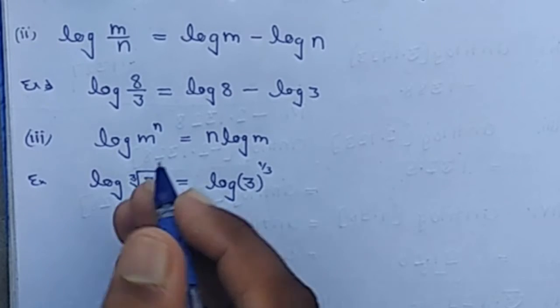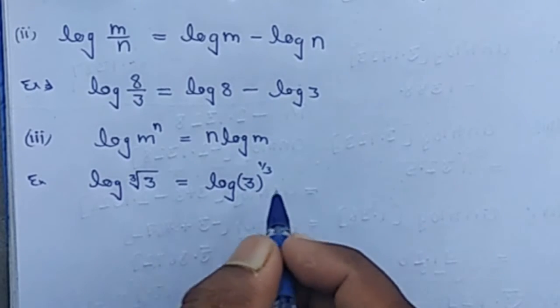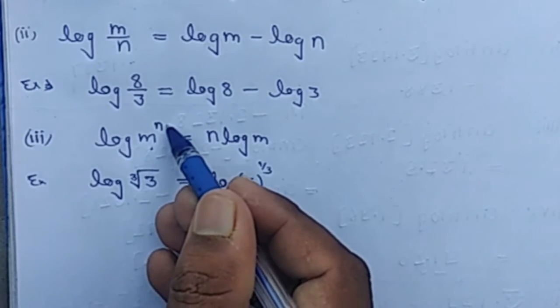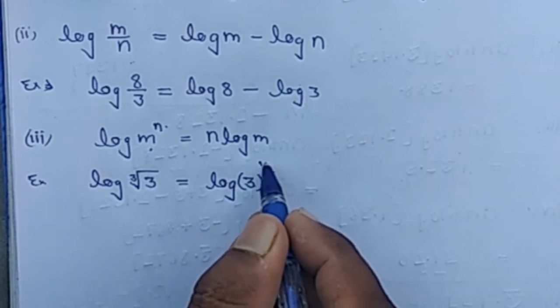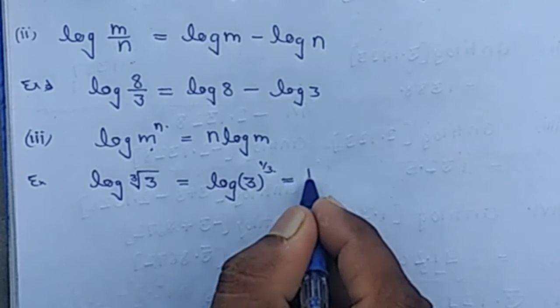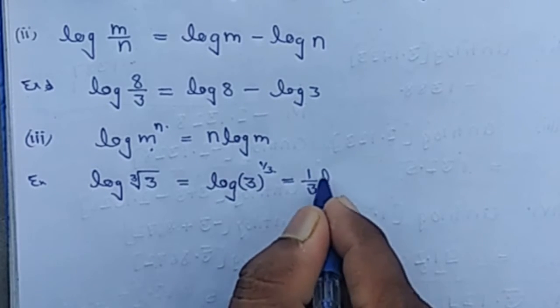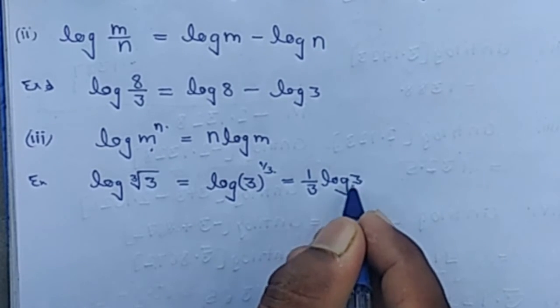nth root of x equals x^(1/n). Now, log(m^n) = n log m, so we can write n log m.